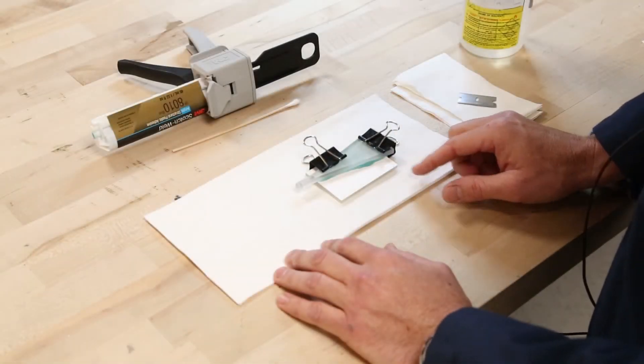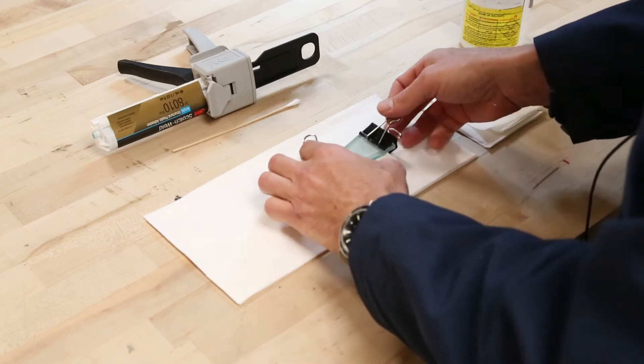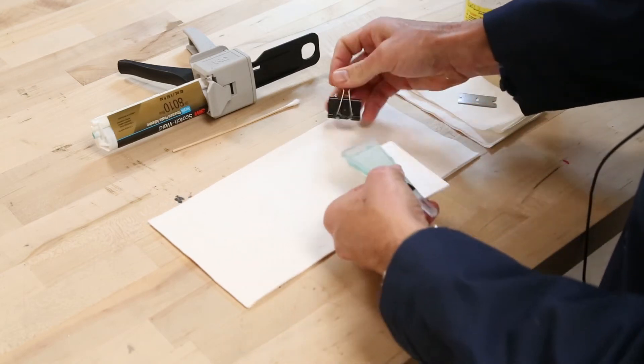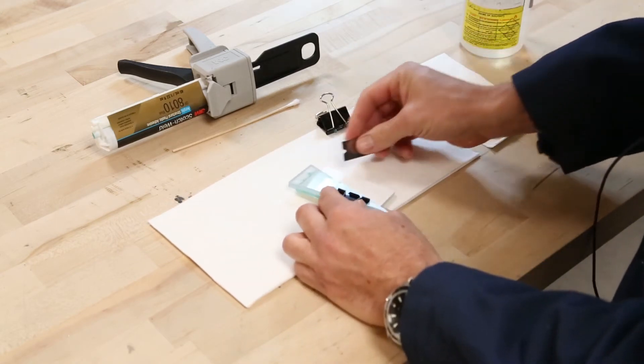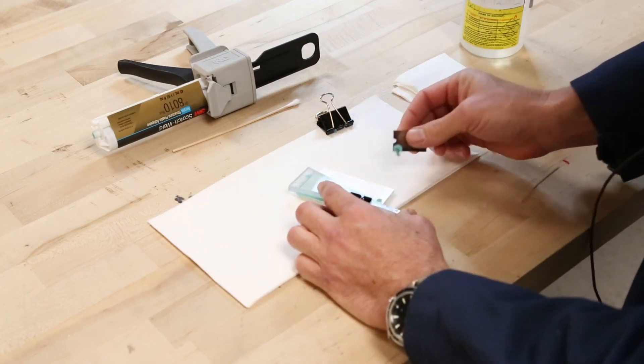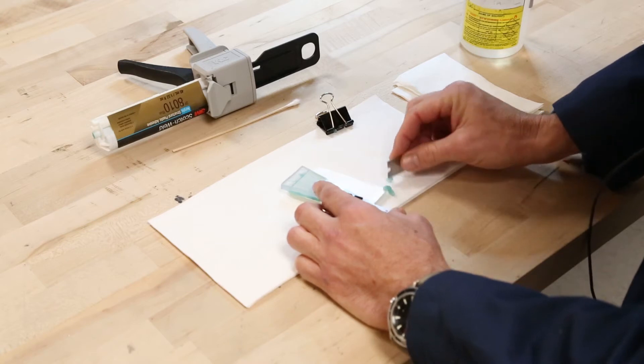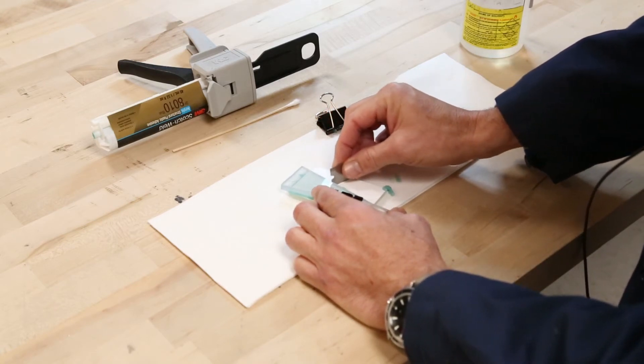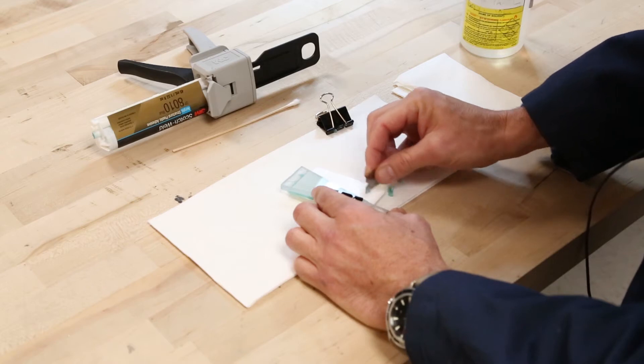So now that the sample has had a few minutes for the epoxy to set up, I'll take it out and I'll use a razor to remove the excess that has pushed out from the edge. And it's a lot easier to do this now as opposed to once it fully sets.